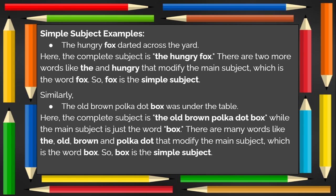Similarly, in 'the old brown polka dot box was under the table,' the complete subject is 'the old brown polka dot box.' While the main subject is just the word box, there are many words like 'the,' 'old,' 'brown,' and 'polka dot' that modify the main subject, which is the word box. So, since box is the main subject, it is also the simple subject.